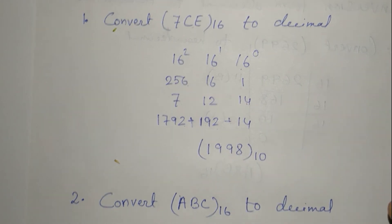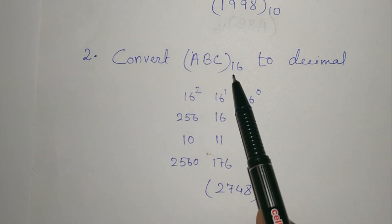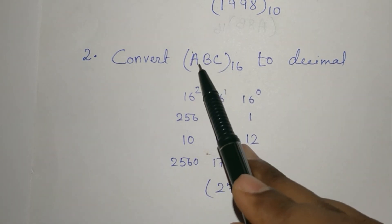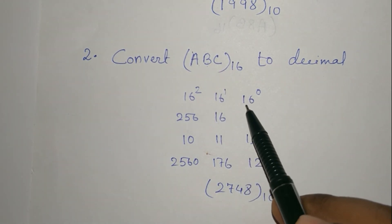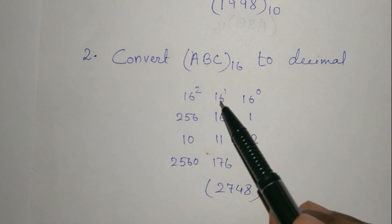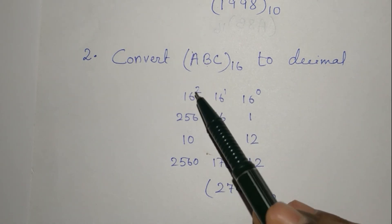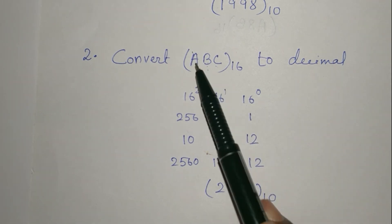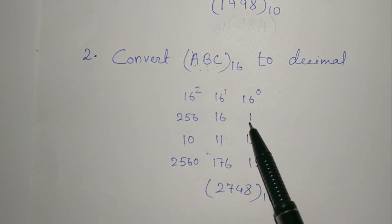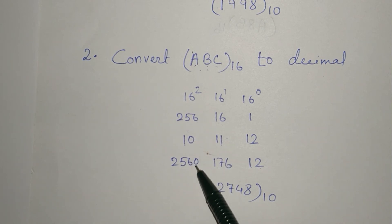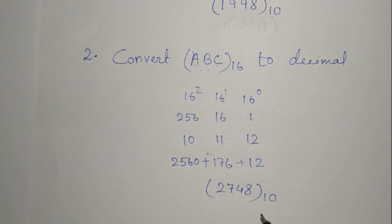One more example: convert ABC base 16 to decimal. A=10, B=11, C=12. There are 3 digits, so 16⁰=1, 16¹=16, 16²=256. Place digits from right to left: C=12, B=11, A=10. Multiply: 12×1=12, 11×16=176, 10×256=2560. Adding: 12+176+2560 = 2748 base 10.